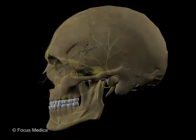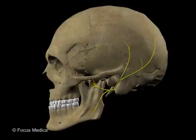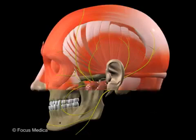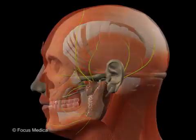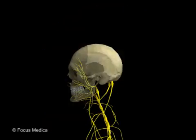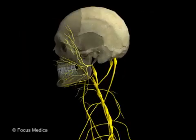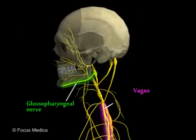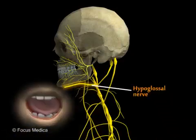The nerves are broadly classified into sensory and motor. The facial nerve is the motor nerve of the face and supplies all the muscles of facial expression. The trigeminal nerve is the sensory nerve of the face. Additional sensory supply is seen in the tongue and pharynx through the glossopharyngeal and vagus nerves, while the hypoglossal nerve is motor to the tongue.